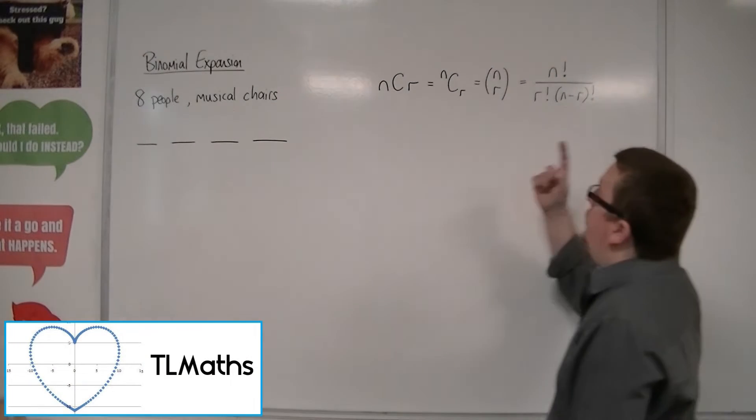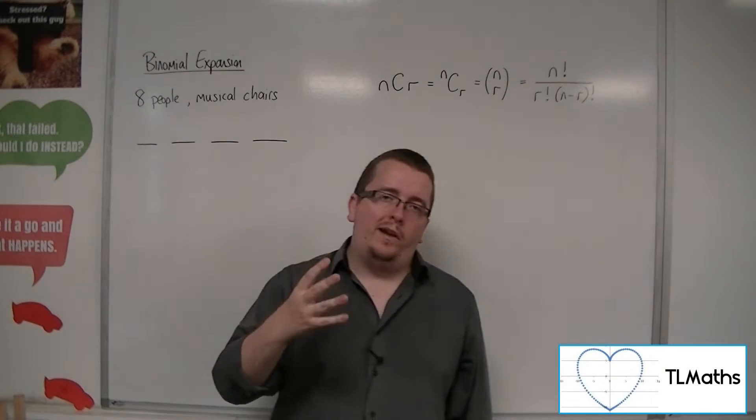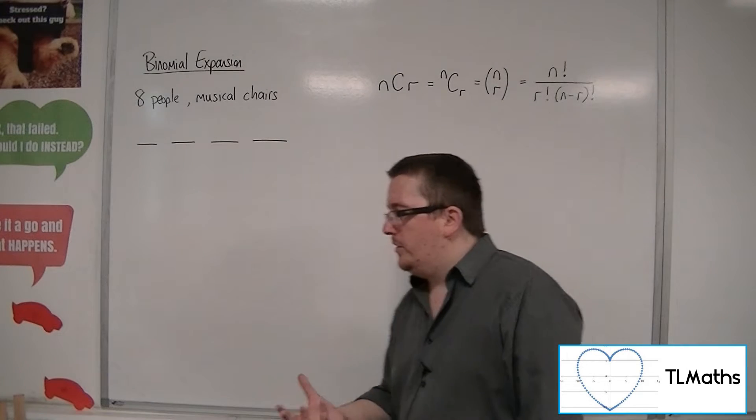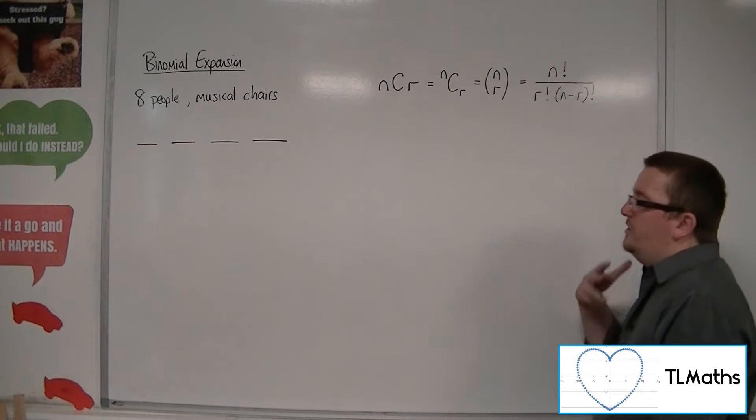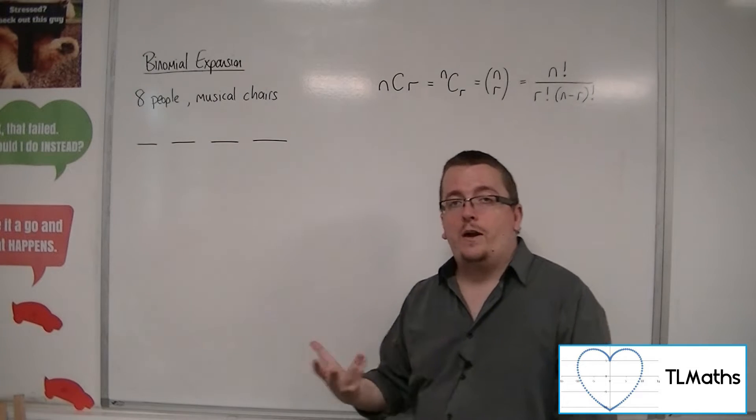In the previous video, I introduced the NCR formula, but I kind of plucked it out of thin air. So I wanted to explain via another example where it comes from and how it's built.